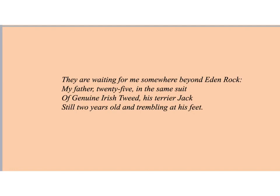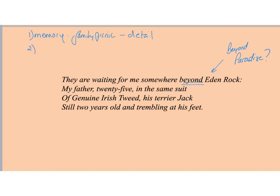'They are waiting for me somewhere beyond Eden Rock' — so it's arguably beyond paradise. You get the idea that this poem can be read in two different ways. First, just as a memory — a family picnic with the details of the tablecloth, bottles, dog, mum's dress. But it becomes a little bit strange when you get things like 'the three suns' and 'I had not thought it would be like this.' Some people interpret it as symbolising a kind of movement towards death or into an afterlife. You can hold both interpretations at the same time.